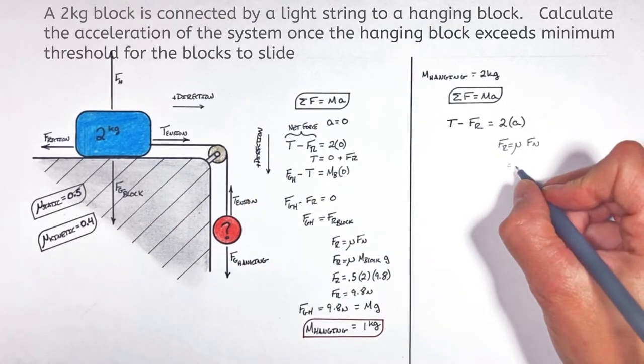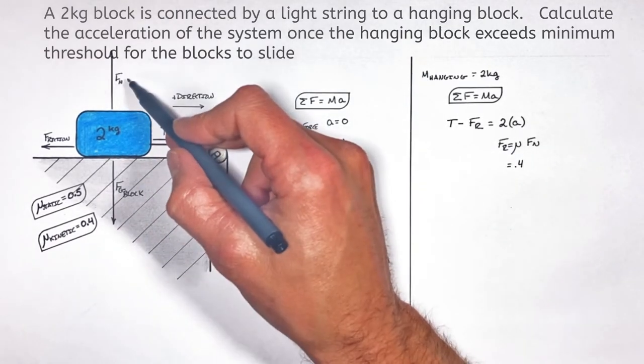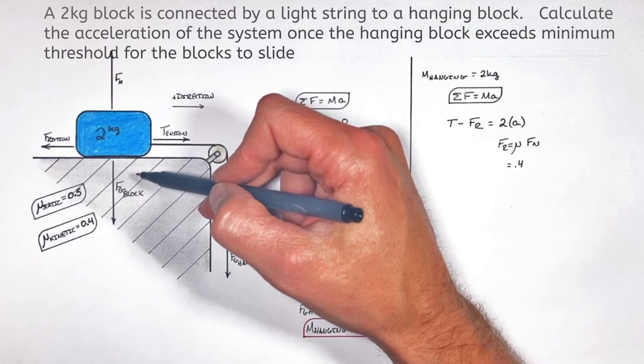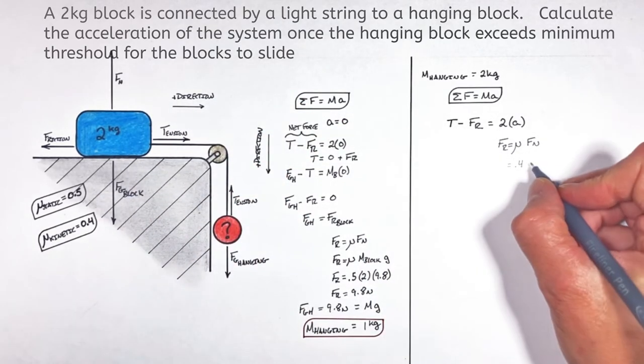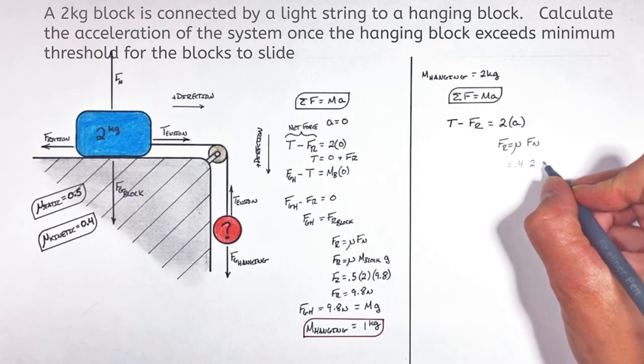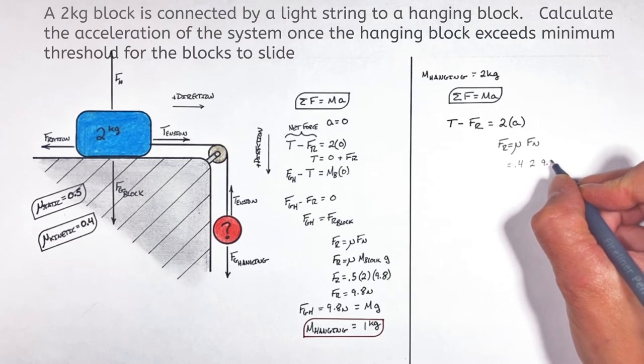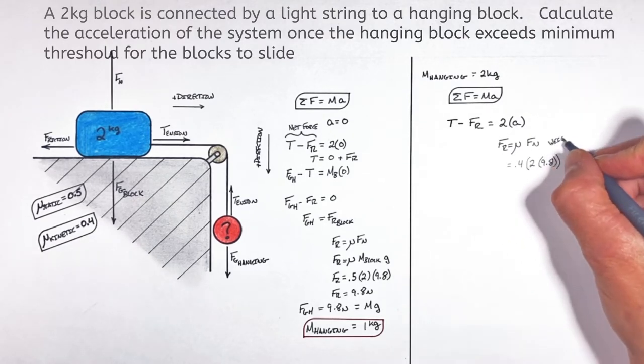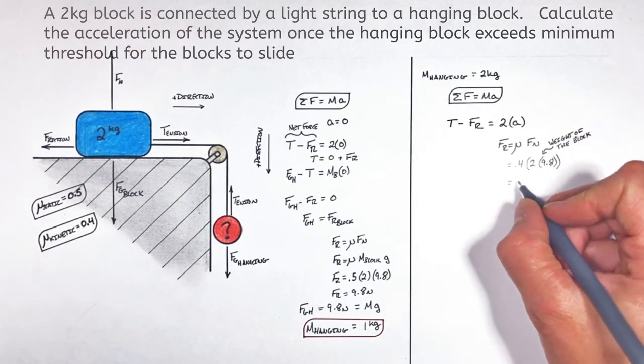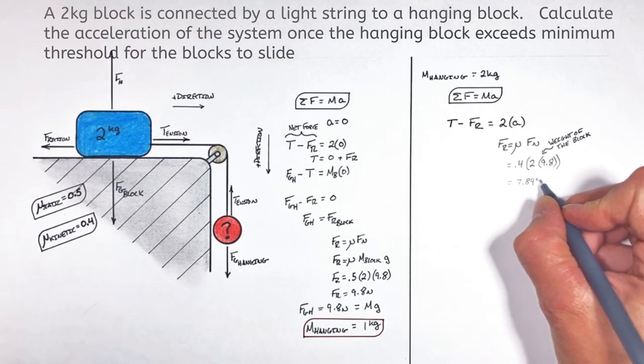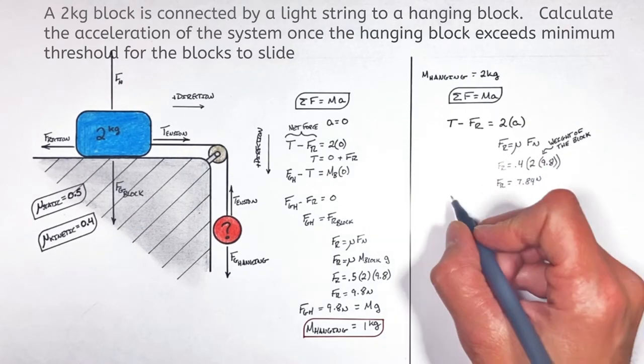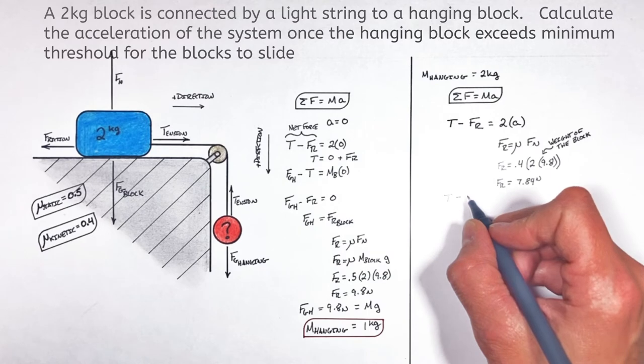We know the coefficient of friction is 0.4 and the normal force, since the block isn't accelerating vertically, is going to be equal to the weight of the block. That's 2 times 9.8 or mg, leaving us with a friction force that has a magnitude of 7.84 newtons.